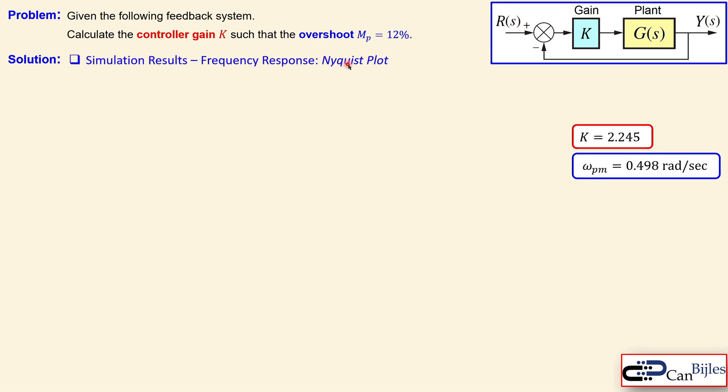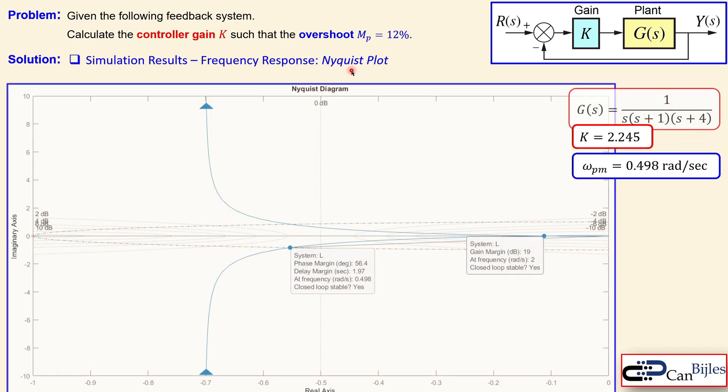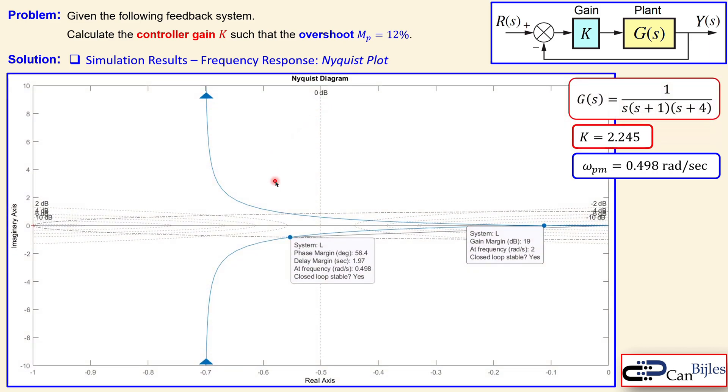Now I do the similar thing with the Nyquist plot. Just to make sure this is indeed correct, the Nyquist plot is shown here for the loop transfer function L. You see here again the phase margin of 56.4 degrees and also the phase margin frequency of 0.498 radians per second. So everything is correct.